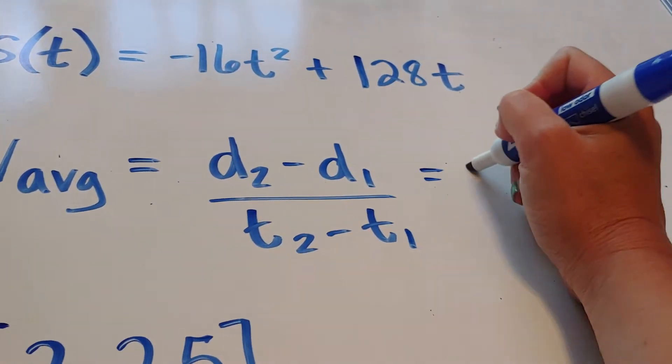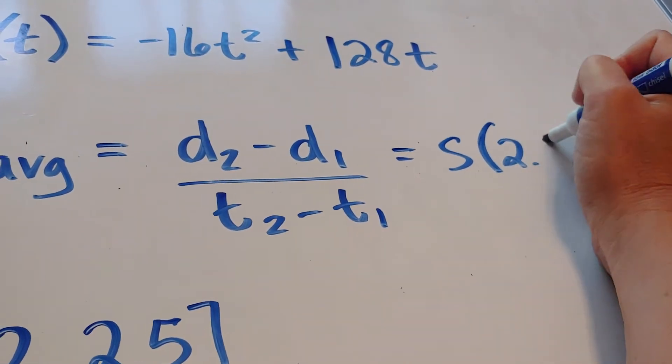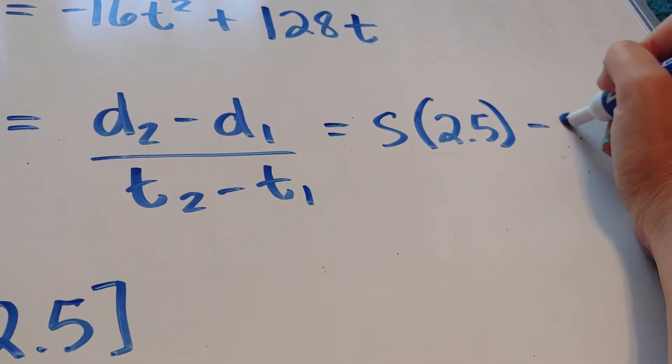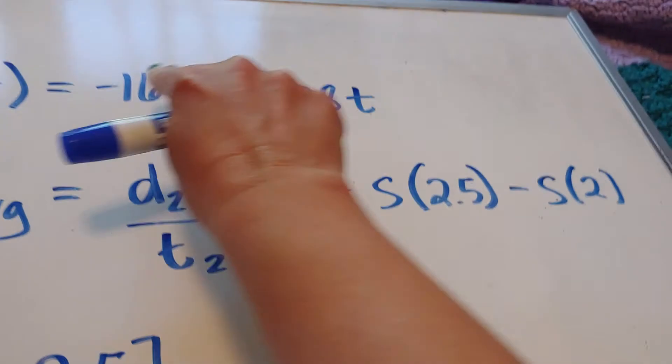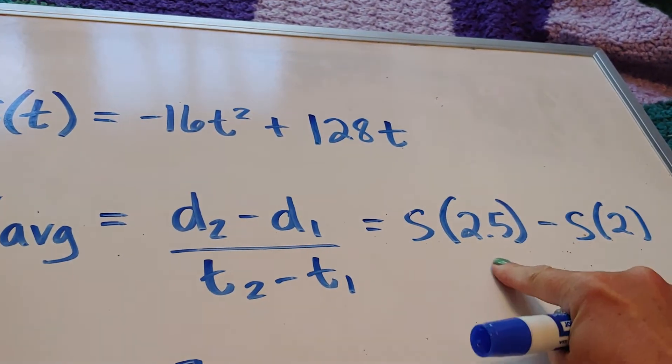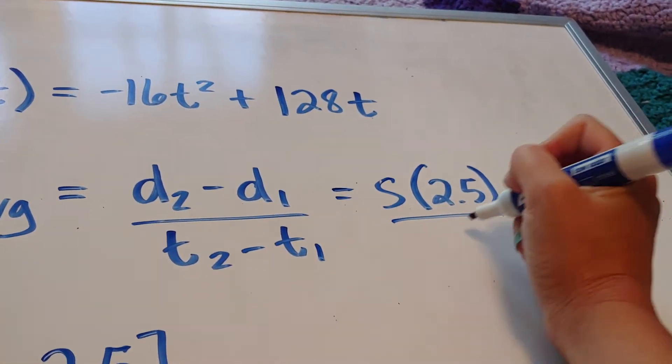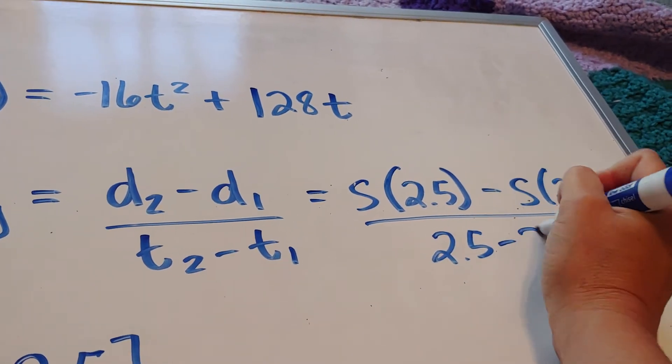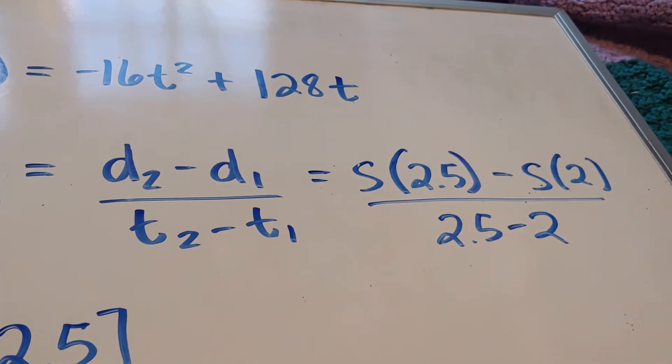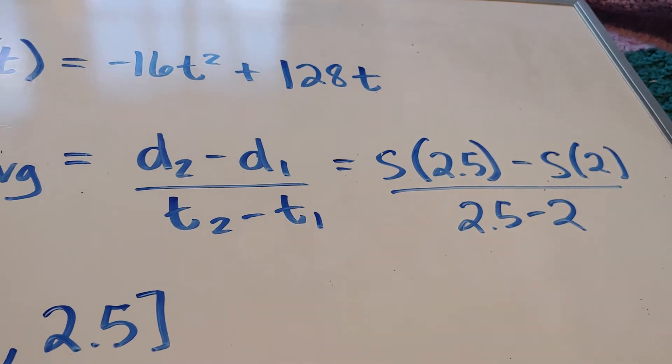So what I'm really doing is I want to take 2.5, plug it into my position function, plug in 2, plug it into my position function, and I'm going to have 2.5 minus 2 in the bottom. So number crunching time.